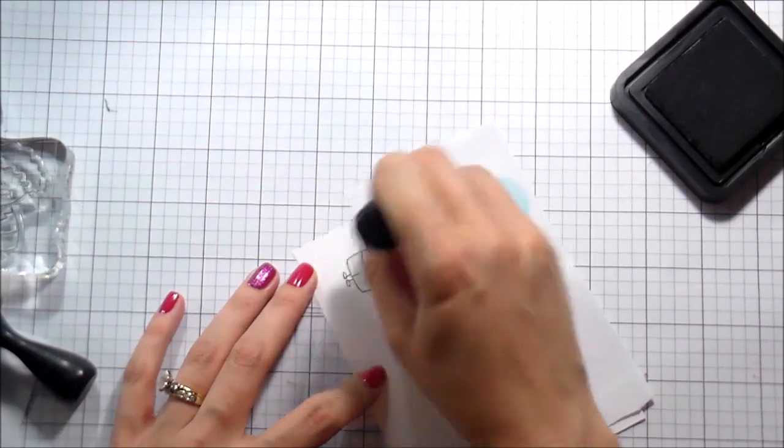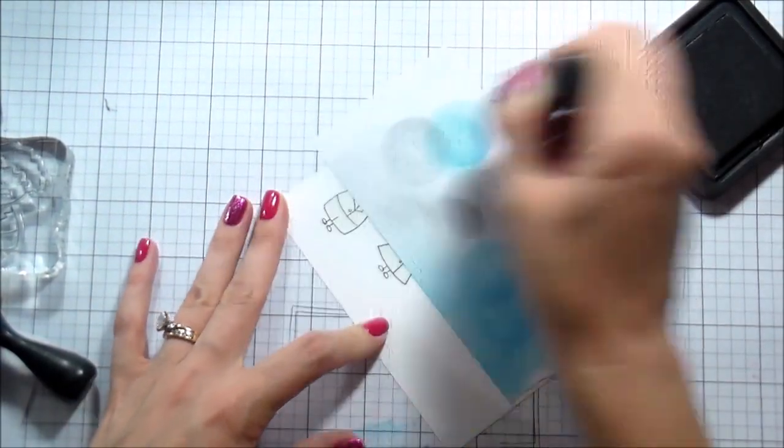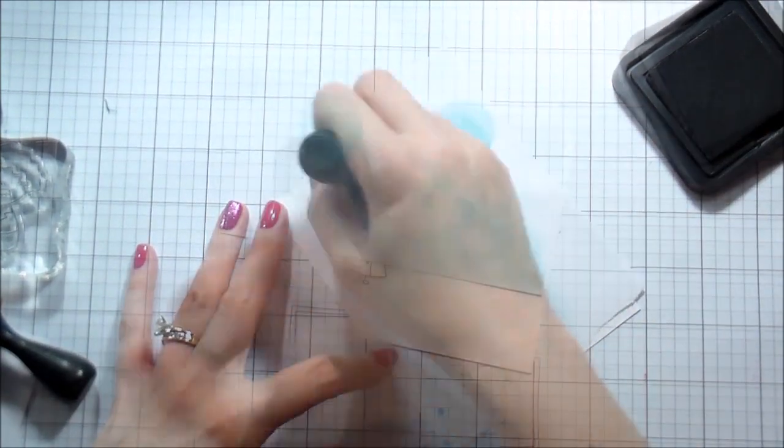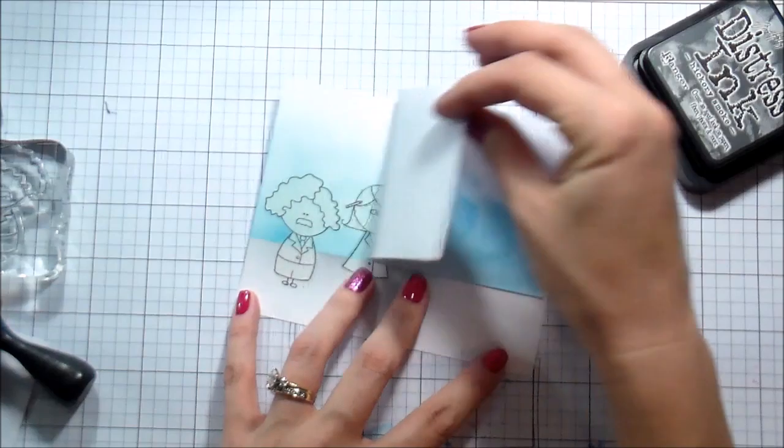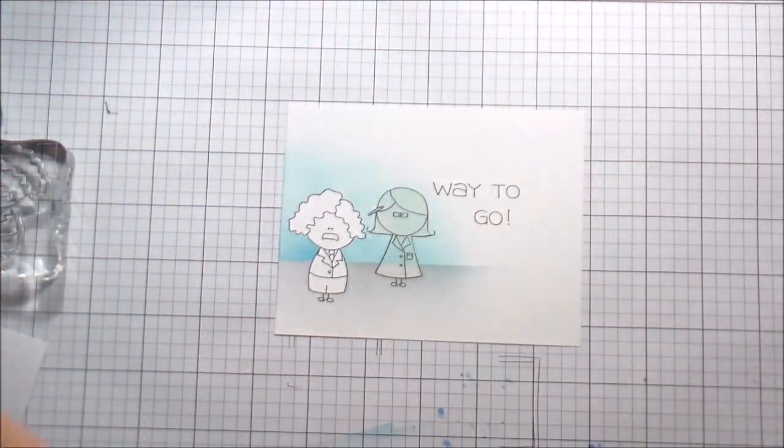I'm going to flip that mask over and then I'm going to give the suggestion of some ground with the hickory smoke, which is like a lightish gray distress ink. So I'm not taking the blue all the way up and I'm not taking the hickory smoke all the way down. I just want to put some color behind my characters so that it gives just that suggestion, the illusion of a background.